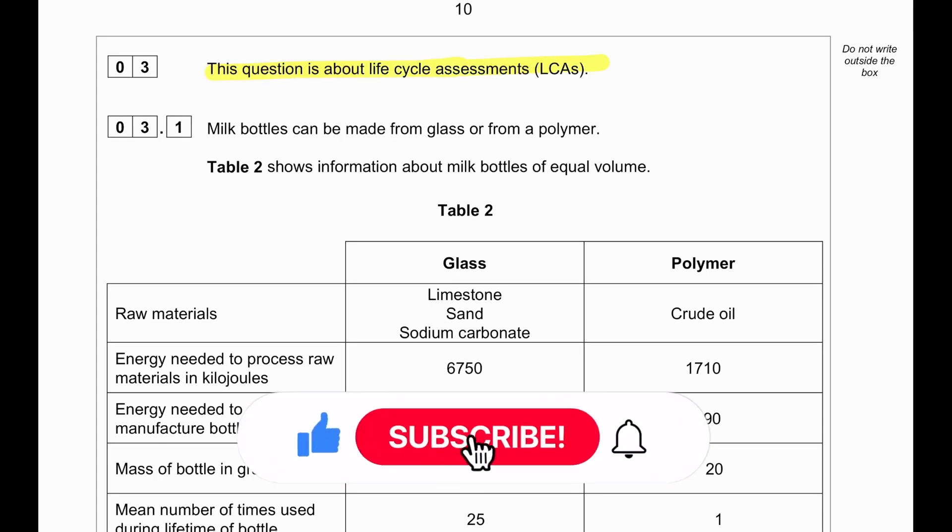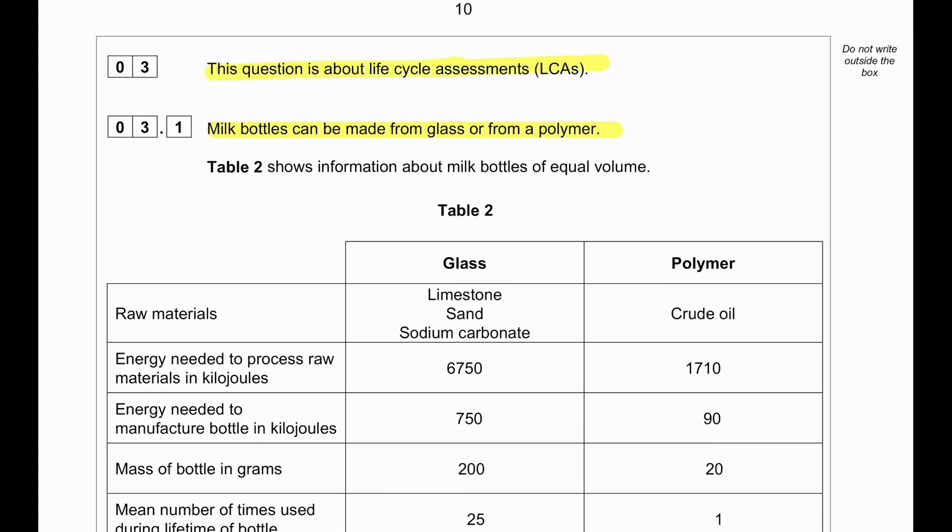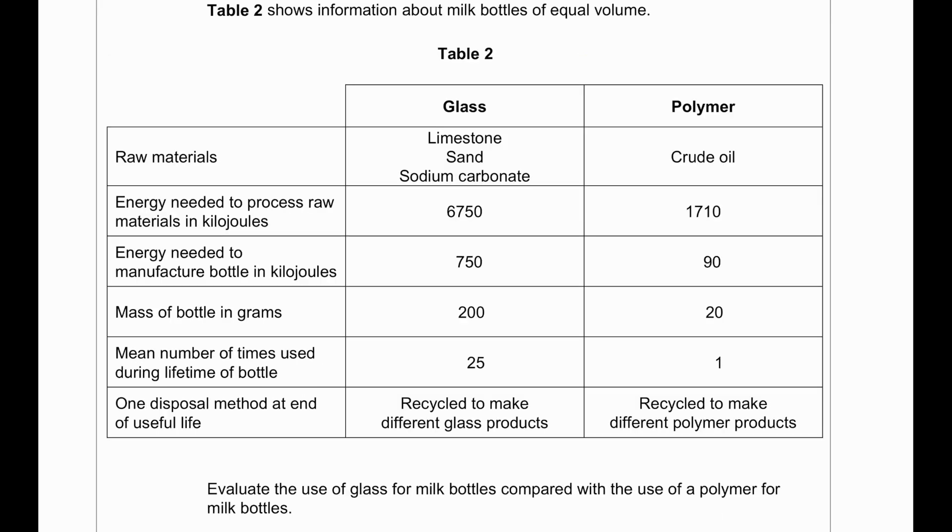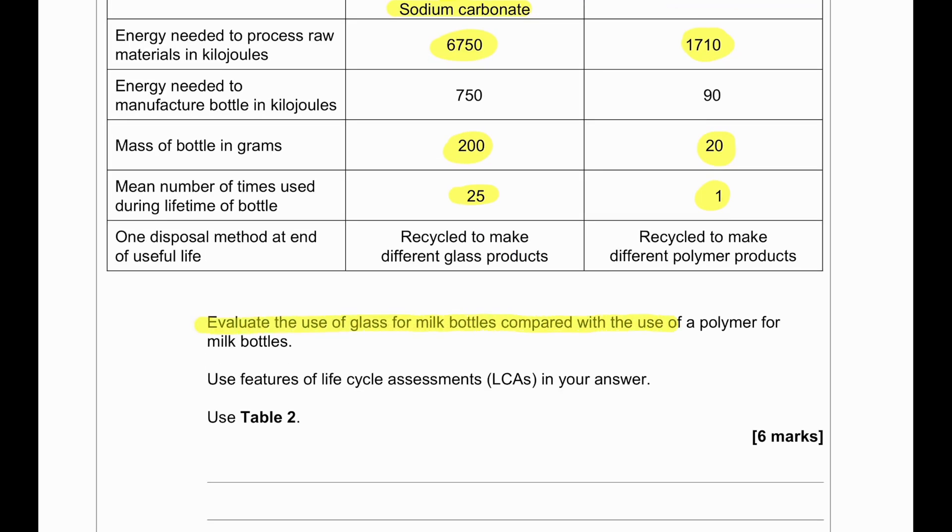This question is about life cycle assessment. Milk bottles can be made from glass and from polymer. We can see the information of milk bottles made for equal volume. In terms of glass, we use limestone, sand, and sodium carbonate. In polymer, we use crude oil. The energy used to produce a glass bottle is 6750 and the energy used to produce polymer is 1710. The mass of the milk bottle is 200 grams, whereas the crude oil polymer produces only 20 grams. It can be recycled 25 times. The polymer can be only used one time. Evaluate the use of glass for milk bottles compared to the use of polymer for milk bottles.